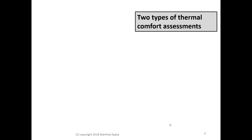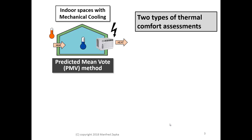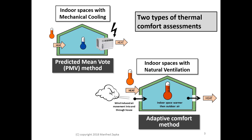ASHRAE 55 standard uses two types of thermal comfort assessment. One is for indoor spaces with mechanical cooling — wherever we have an AC installed — and here we use the method of Predicted Mean Vote, PMV. The other thermal comfort assessment is for indoor spaces with natural ventilation where we do not have mechanical cooling, and here we use the so-called adaptive comfort method.